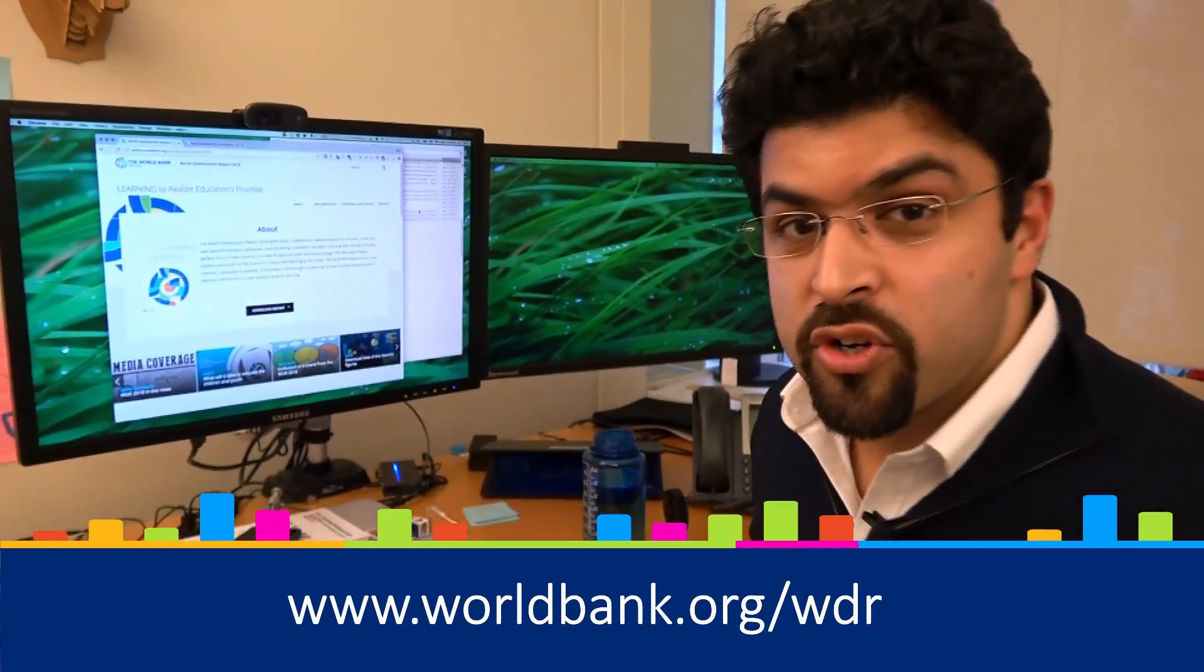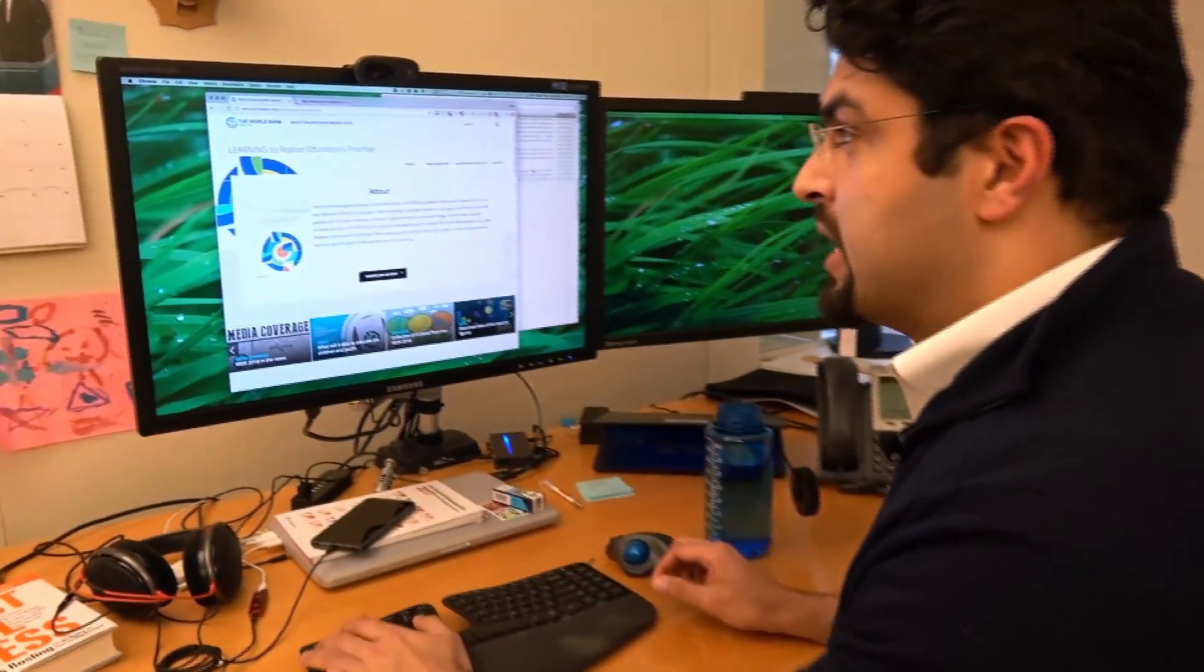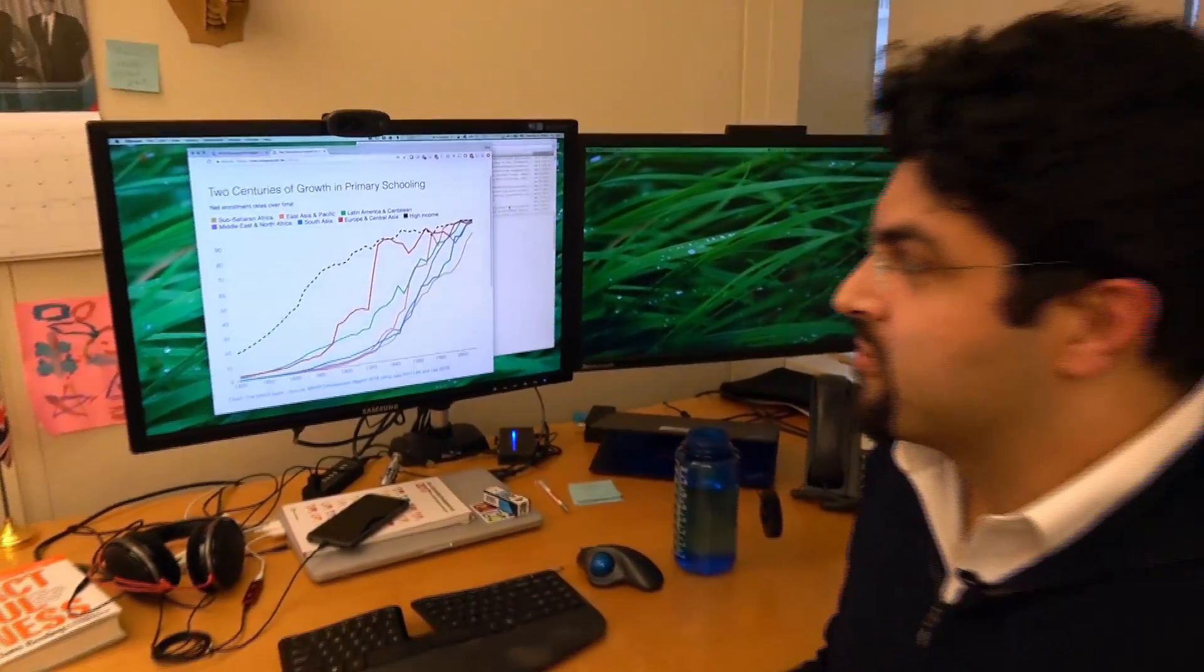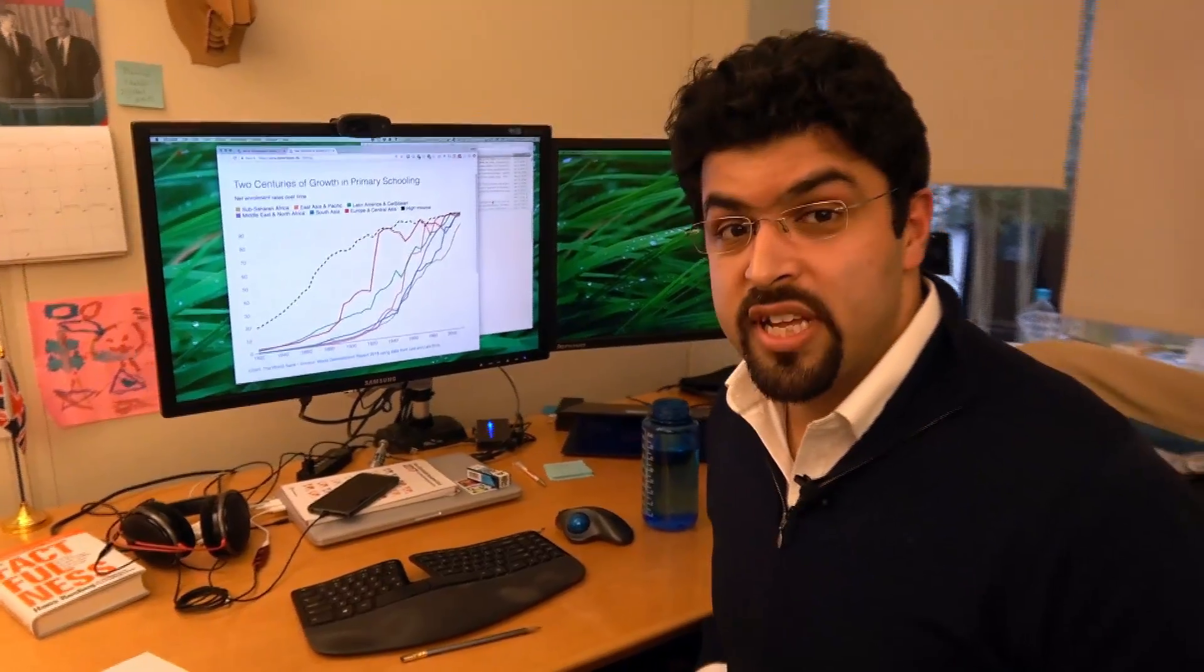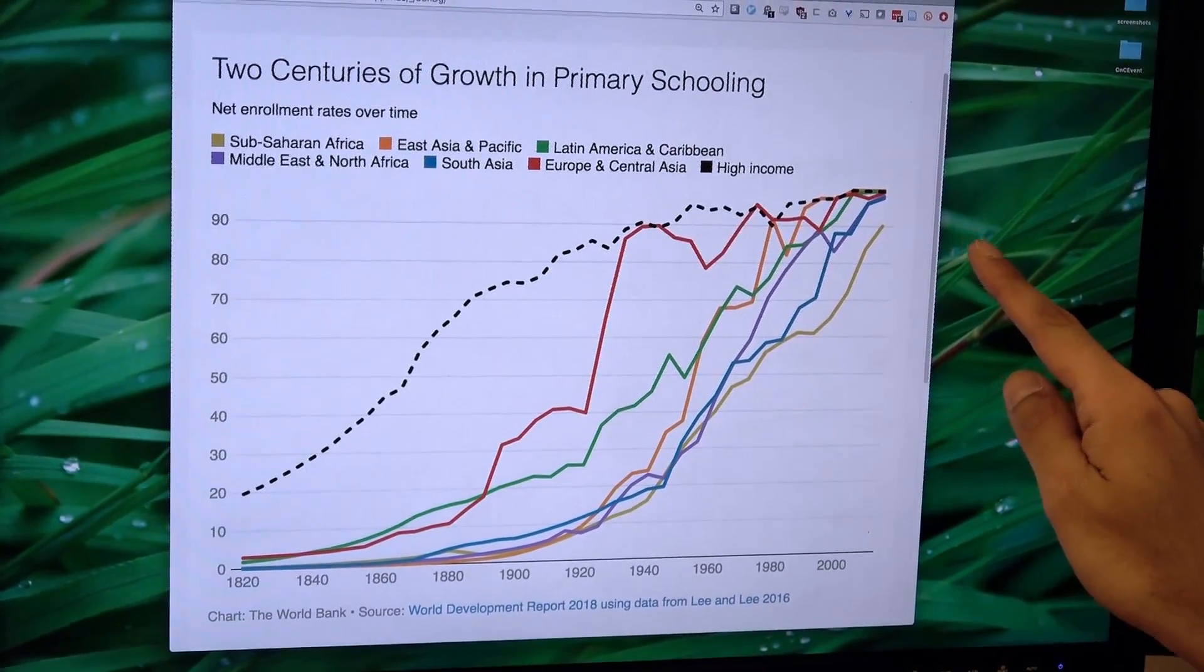The 2018 World Development Report looked at education, and my favorite chart from this entire report is this one. This is the state of primary schooling over the last 200 years. Now, back in 1820, even in high-income countries shown on this black line, only one in five kids enrolled in primary school.